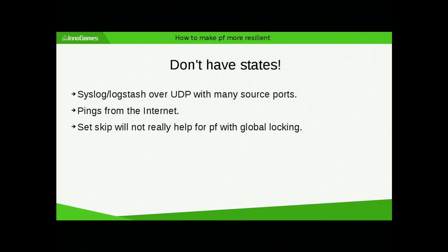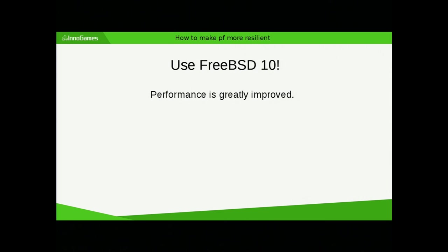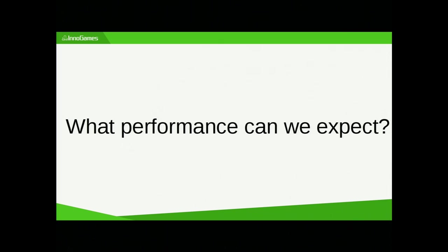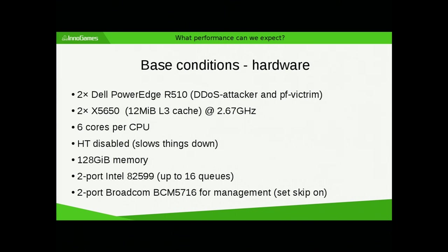The last step to make PF more resilient is to use FreeBSD 10 because it works much faster and scales nicely. For performance testing, I got some Dell servers with quite nice CPUs — 12 MB L3 cache, 6 cores. I disabled hyper-threading from experience because it only slows things down when handling network traffic.